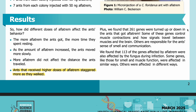We found that 261 genes were turned up or down in the ants that received aflatrem. Some of these genes control muscle contractions and how signals travel between muscles and the brain. Others are responsible for the ants' sense of smell and communication. We found that 113 of the genes affected by aflatrem were also affected by the fungus during infection.